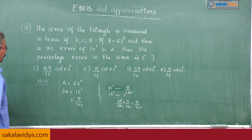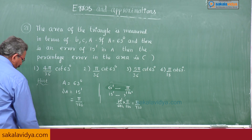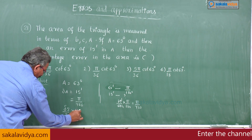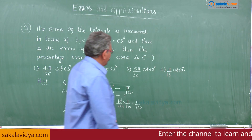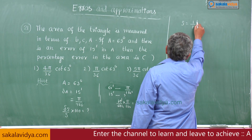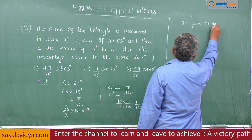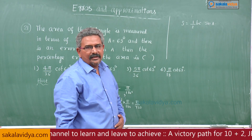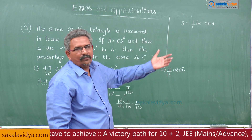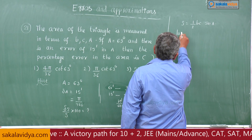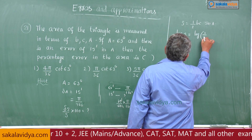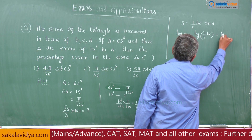We have to find the percentage error in the area. Let s be the area; we need delta s / s × 100. The area is given by s = (1/2) bc sin A. In order to find percentage error, for any formula we apply logarithm. So log s = log(bc constant) + log(sin A).